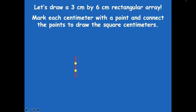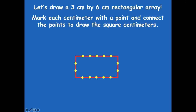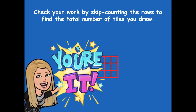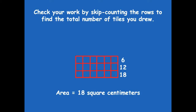Here's what I came up with. I drew 6 centimeters, marked a little dot at each centimeter, then drew in the other two sides. I connected those dots, making my square tiles inside. Then those dots are gone and I'm left with just my rectangle. Check your work by skip counting the rows to find the total number of tiles — count by 6s because there are 6 in each row, and make sure you have a total of 18. Pause the video to do that. 6, 12, 18 — and we know the total area is 18 square centimeters.